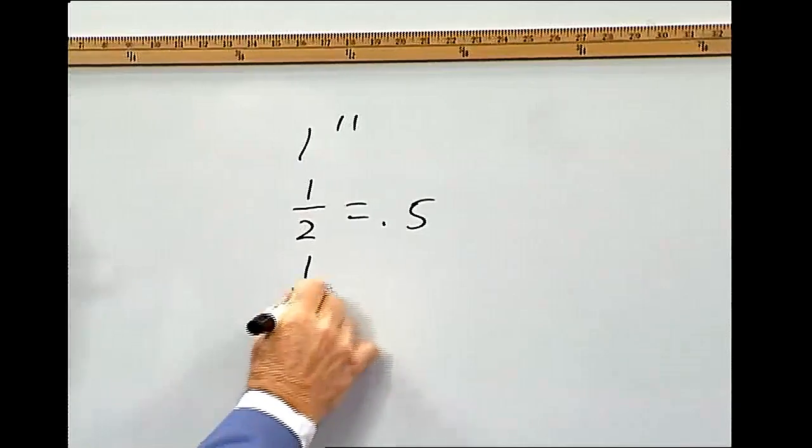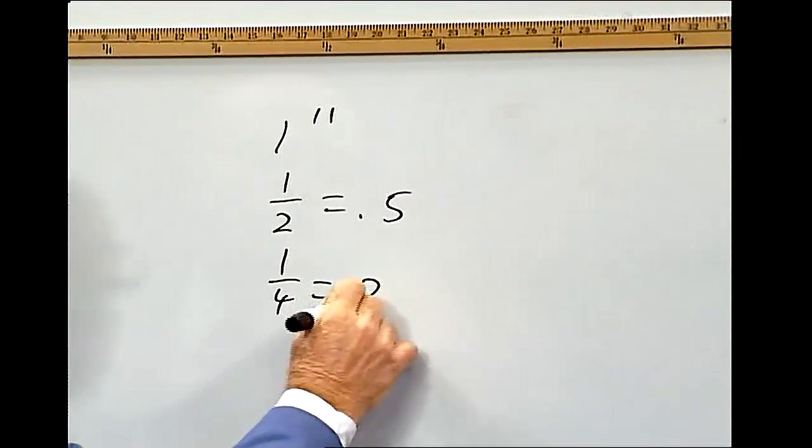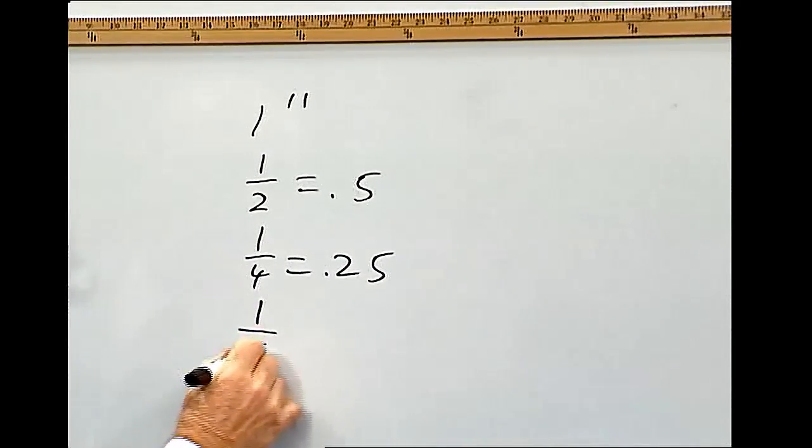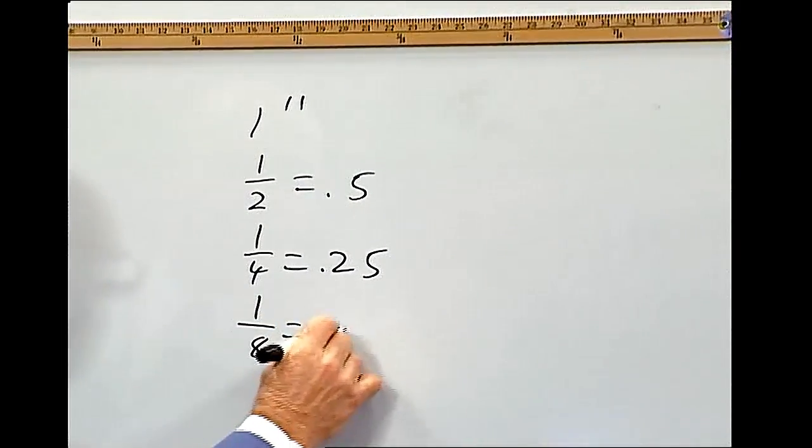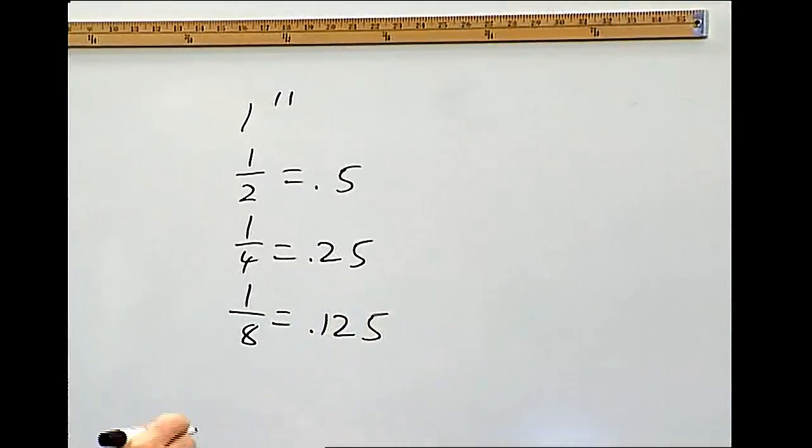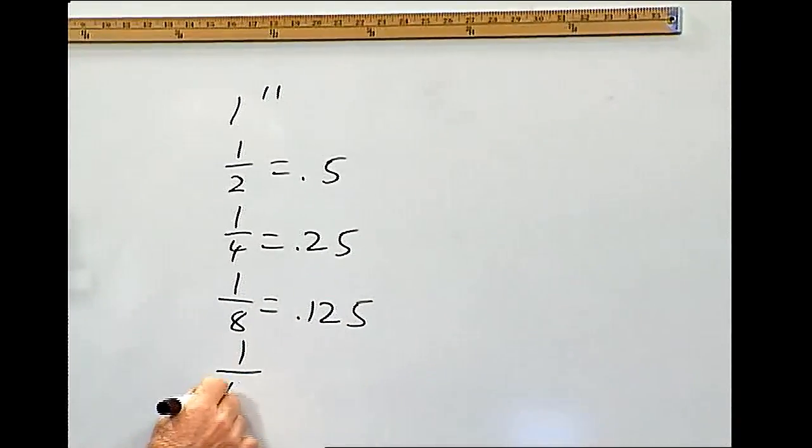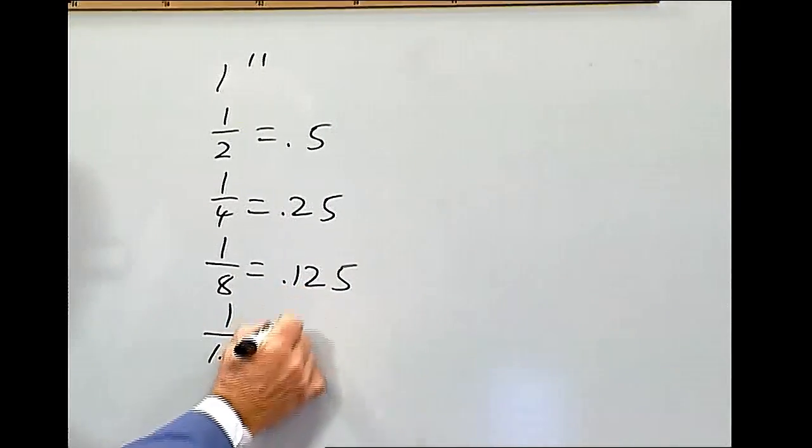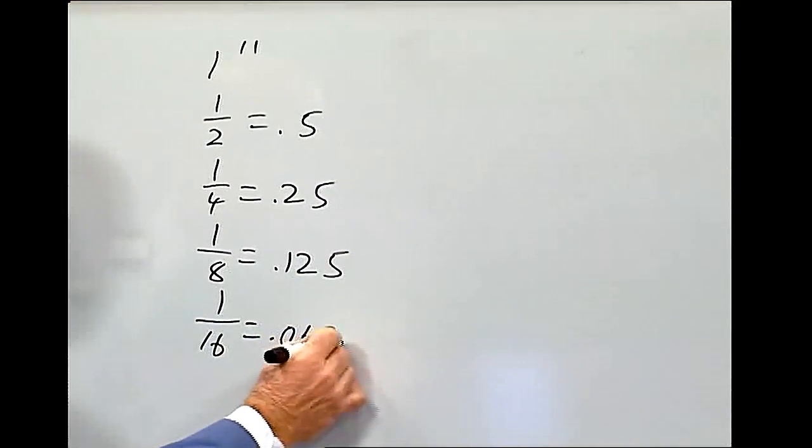Then you have one quarter equals point two five. One-eighth equals point one-two-five. One-sixteenth equals point, that's half of that, oh-six-two-five.